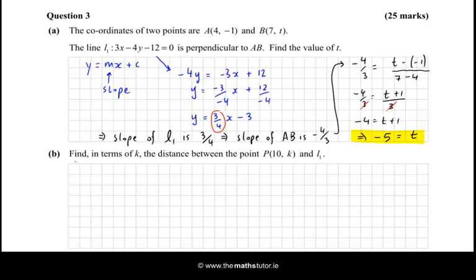So the formula is as follows. d, for distance, is |ax1 + by1 + c| / √(a² + b²). And we need to have L1 in that format, and it is. So we know that a is 3, b is -4, and c is -12. And then the point (x1, y1) is just (10, k). So let's just sub everything in.